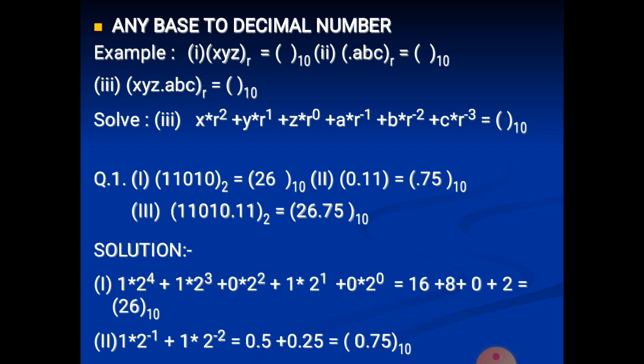If the binary number has a fractional part, like 0.11 binary, we convert it as: 1×2⁻¹ + 1×2⁻² = 0.5 + 0.25 = 0.75 decimal. If both integer and fractional parts are combined, we apply powers on the left side starting from 2⁰, 2¹, 2², 2³ and on the right side 2⁻¹, 2⁻² and so on. The total sum gives 26.75. This is the any-base-to-decimal conversion.